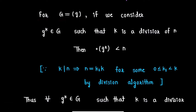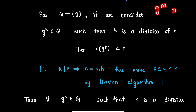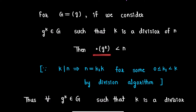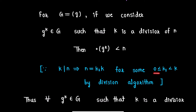For G equal to the cyclic group generated by element g, every element in group G will be of the form g^m for some integer m. Now consider an element g^k in G such that k is a divisor of n. Then the order of g^k will be strictly less than n, because as k is a divisor of n, n can be written as k·k1 for some k1 greater than or equal to 0 and strictly less than k.